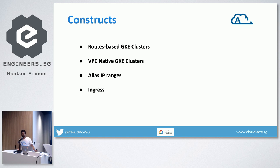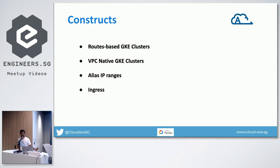Moving to VPC-native GKE clusters — that's where network endpoint groups and container load balancing come into picture. They try to eliminate some routes and create VPC-native routes instead. By VPC-native routes, we mean that when you create a subnet in Google Cloud, a route is automatically created for you — that is the native route, and it is quite efficient because it just works out of the box. When you create a VPC-native GKE cluster, Google creates such native routes for your pod and service networks.